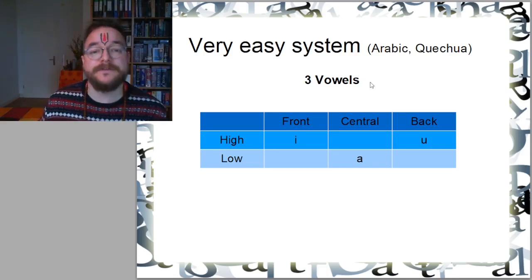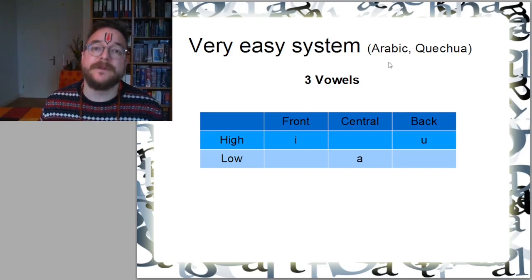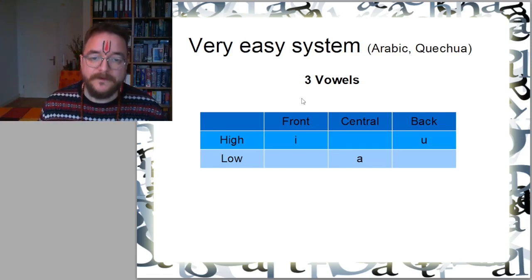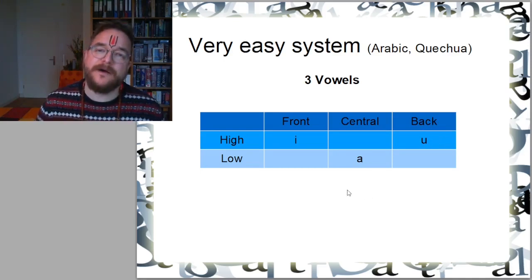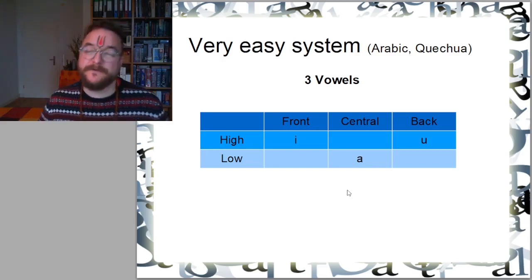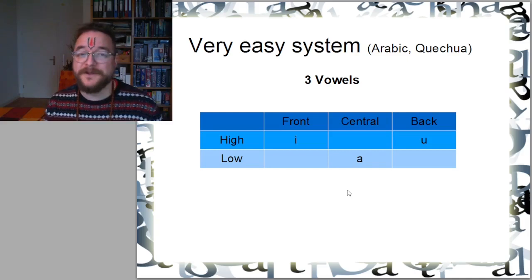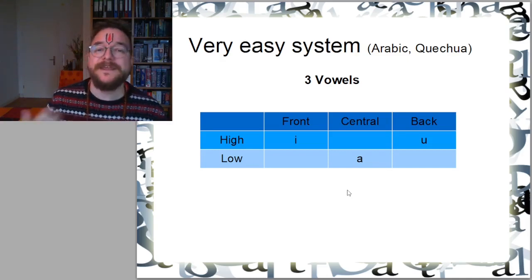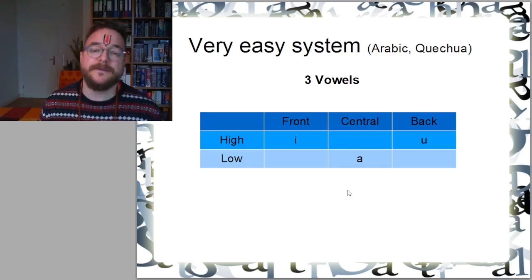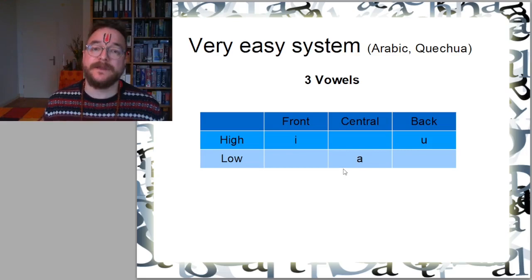Let's have a look at a very easy vowel inventory. I've chosen the three most basic vowels I could find. There are actually languages in the world that have a similar system to this one, for example Arabic or Quechua spoken in South America. Here you have the table: the high front vowel is I, the central low vowel is A, and the back high vowel is U. Usually if you have such a small vowel inventory, each vowel phoneme will have different possibilities of pronunciation depending on which other sounds are surrounding it.